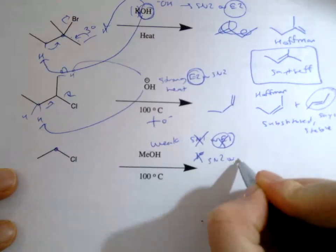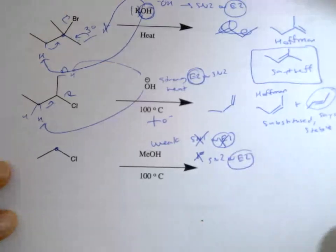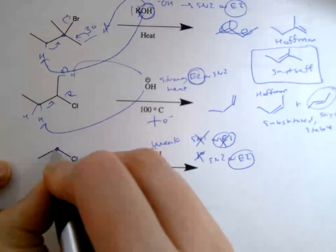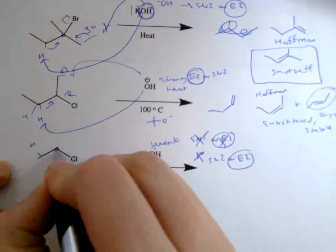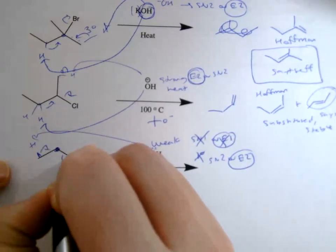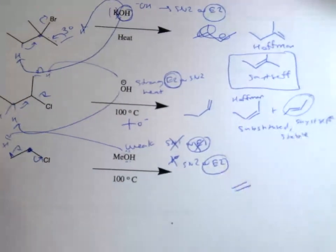Even though it's weak, it's actually going to go SN2 or E2, and with heat it'll favor E2 primarily. That means there's only one place we can take our hydrogen from. This is our carbon of interest and this is our beta hydrogen, so there's only one product possible. Your product would be ethene, the simplest alkene possible.